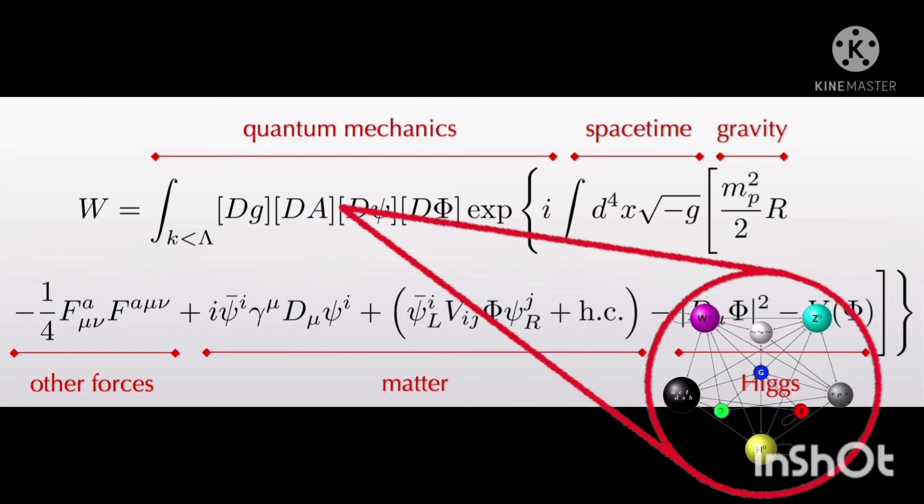The A in DA represents all of the other bosonic forces such as photons, gluons, and WZ bosons.